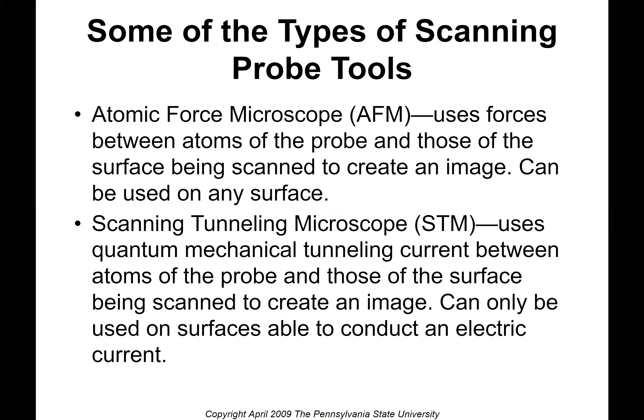There are two main types of scanning probe tools. One is the atomic force microscope, AFM, which uses forces between atoms of the probe and those of the surface being scanned to create an image and can be used on any surface. The second type is the scanning tunneling microscope, STM, which uses quantum mechanical tunneling current between atoms of the probe and those of the surface to create an image. These can only be used on surfaces that can conduct electrical current. The STM is the one we saw in the earlier video.